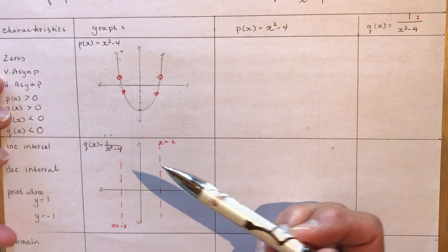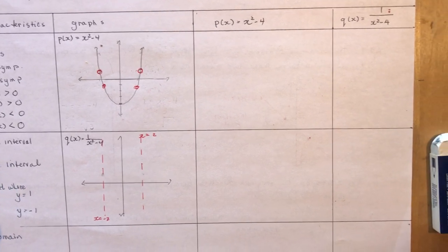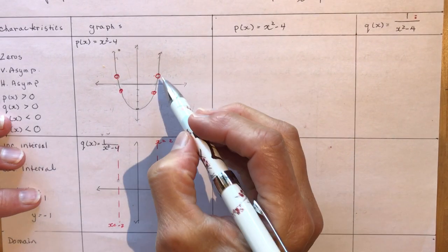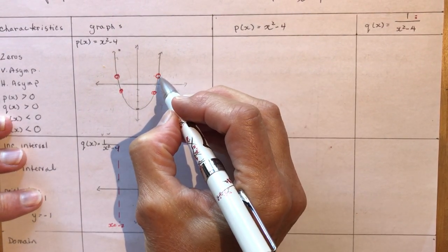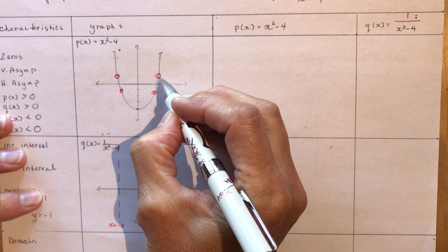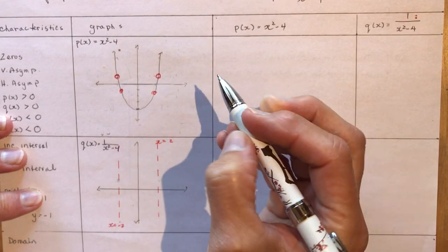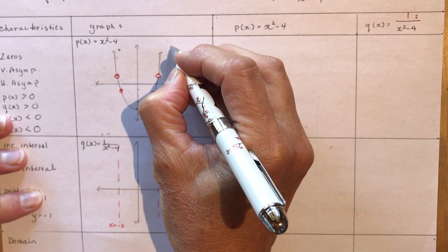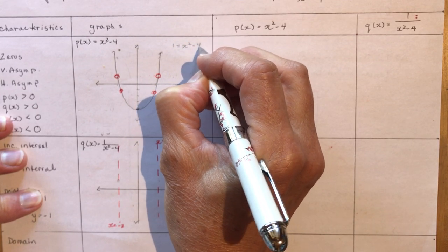An invariant point is just a point that when you take the reciprocal of it, you're still going to be in the same place. For instance, 1 over 1 is still 1. So I want to know at what x value the height of the function would be plus or minus 1. You just set p(x) equal to 1 and solve for x.